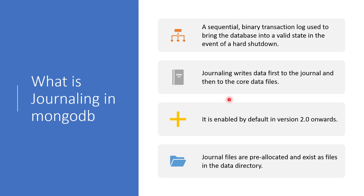Whenever there is a transaction happening in a MongoDB database, the transaction is first written to the journal file and then it is saved to the database files. If we talk about which version it was enabled by default — from version 2.0 onwards it has been enabled by default, and as of now it is version 4.4.